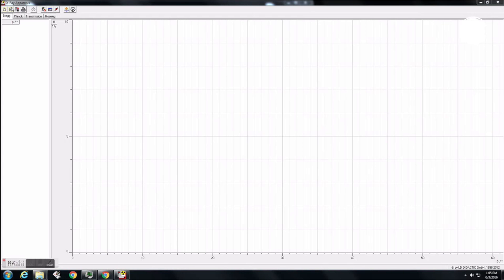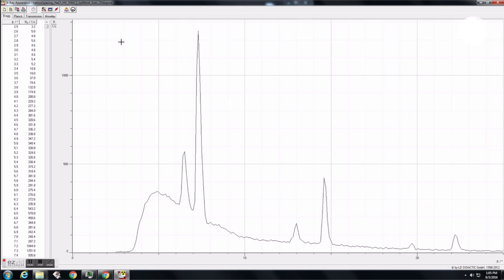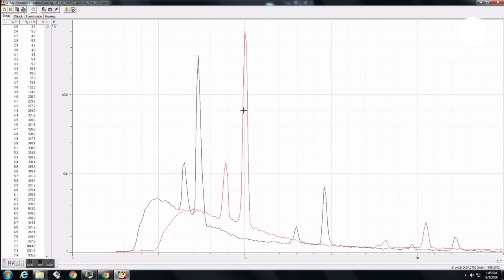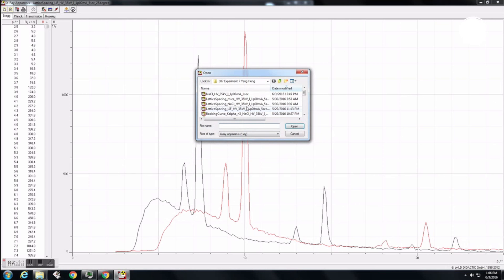For example, to measure the lattice spacing of mica, simply replace the sodium chloride crystal with mica, and try scans from 2.5 degrees to 25 degrees. Calculate the lattice spacings for all crystals used in this lab. The graph above shows the angular spectrum for all crystals used in this lab.